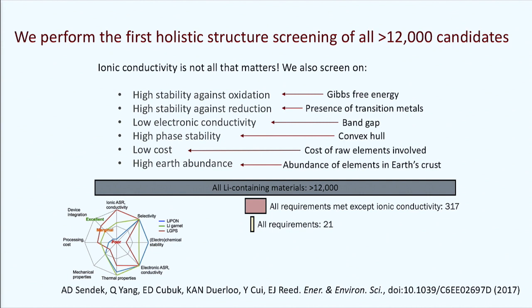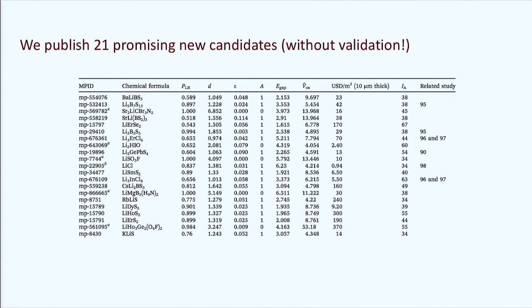The list of 21 candidates is published in our paper, and we published this without validation — we put our necks on the line. We wanted to publish without validation as a way of saying this is truly a predictive effort; we're not going to tweak the model based on things we've discovered in the meantime. So we put it out there, and the strategy is: publish and pray that you're right.